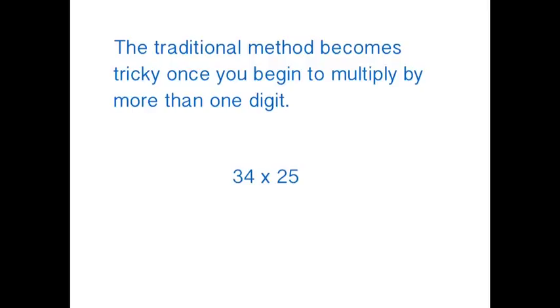The traditional method becomes tricky once you begin to multiply by more than one digit. For instance, if you had to work out 34 times 25,